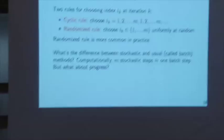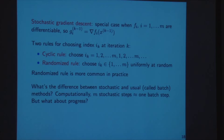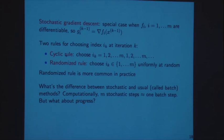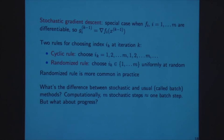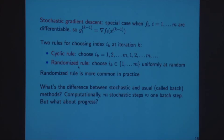An alternative approach is the stochastic or incremental subgradient method — a special case of which is stochastic gradient descent when the functions are differentiable. It just chooses one element of the sum and takes the subgradient with respect to that function. There are typically two ways to choose: cyclically, taking each in turn, or the randomized rule, which chooses a function uniformly at random from our set of M functions. The randomized rule is more common in practice.